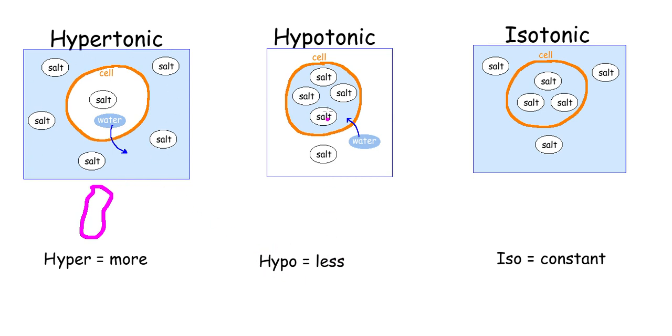Hypo means less. Hypotonic means there is less salt around the cell than inside the cell, forcing the water to go inside the cell. Therefore the cell will expand.